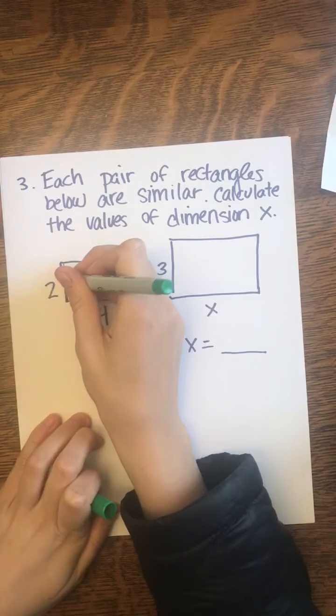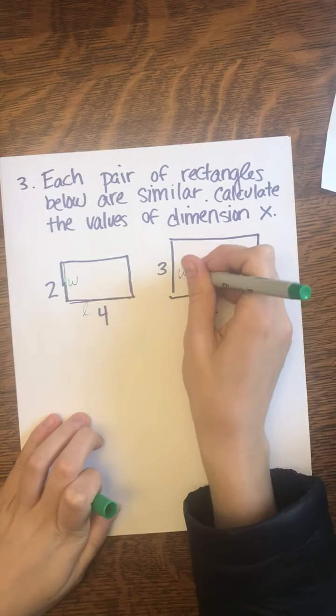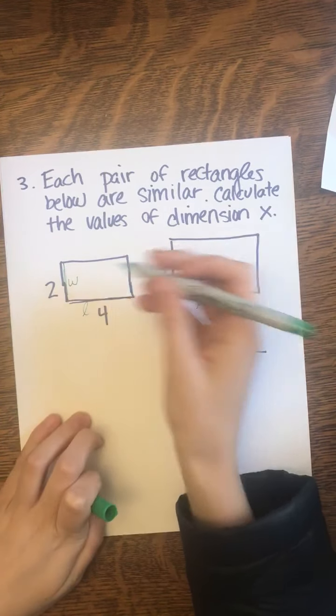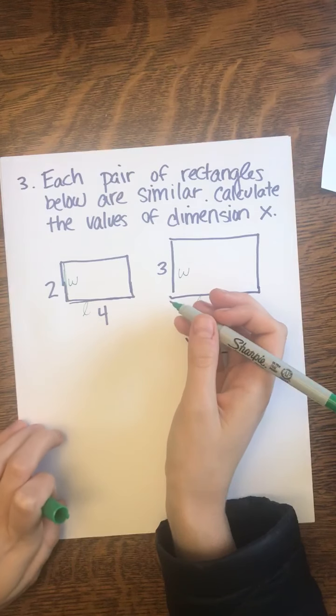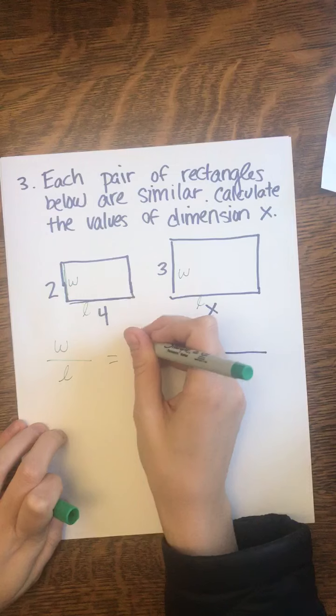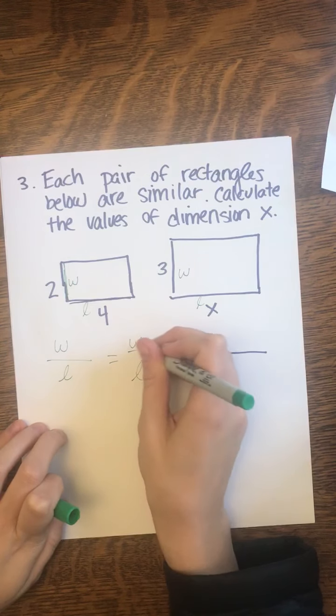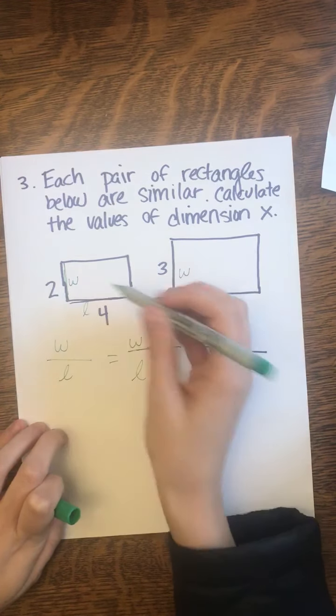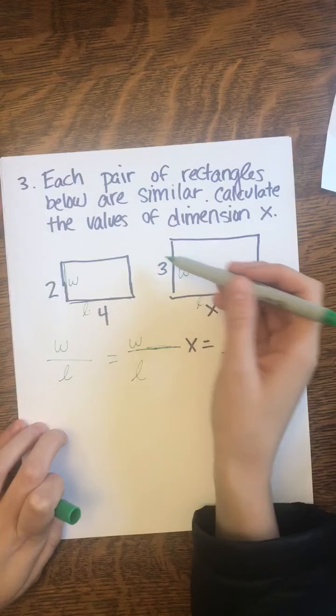This is the length, this is the width, this is the length, this is the width. So I'm going to set up my proportion where I have width over length equals width over length. And now I can plug in my values since I know what my width and my length are.